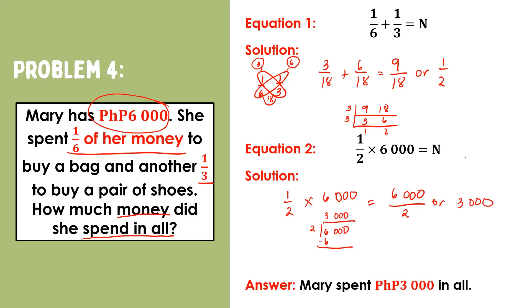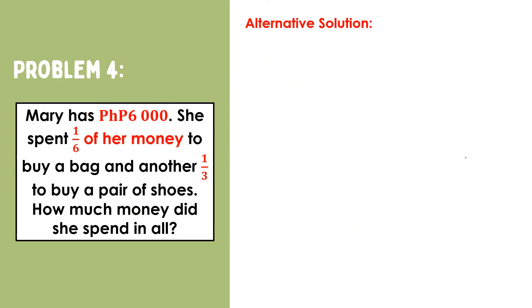This problem is an example of a multi-step word problem since it involves more than one operation. Now, let me show you an alternative solution to this problem. Instead of adding the fractions first, we may start with identifying what one-sixth of six-thousand is and what one-third of six-thousand is.